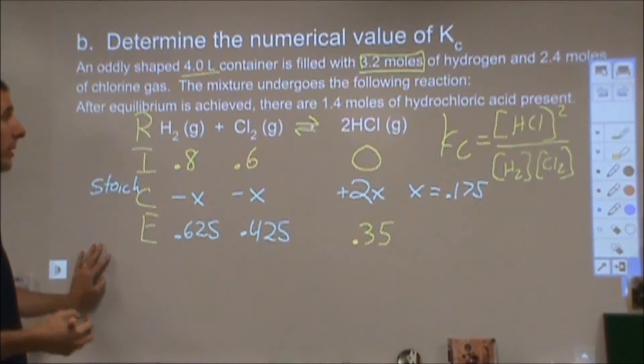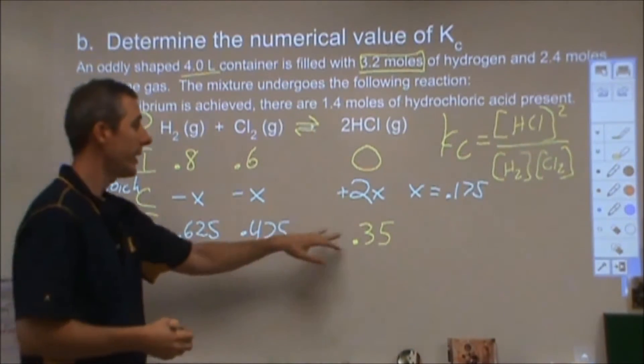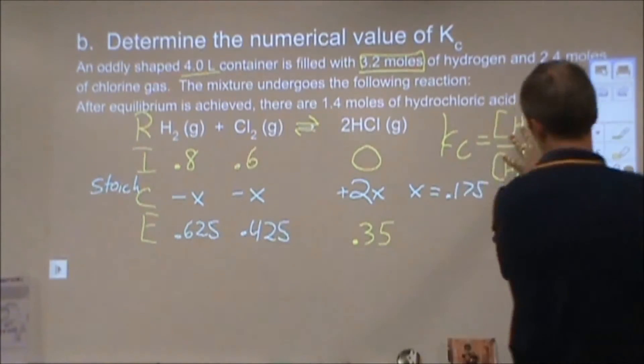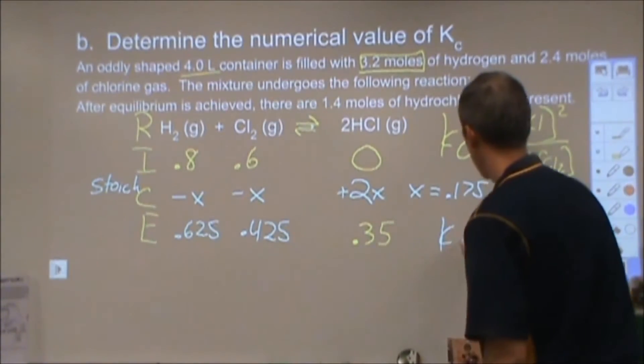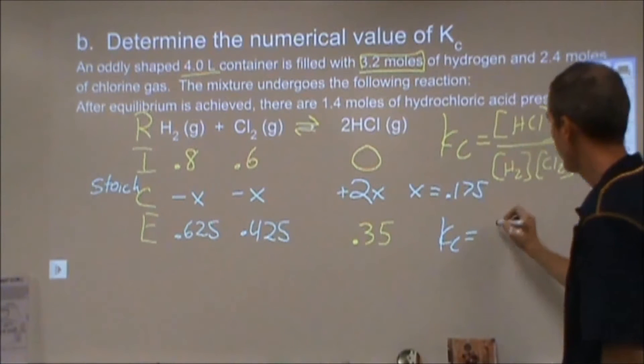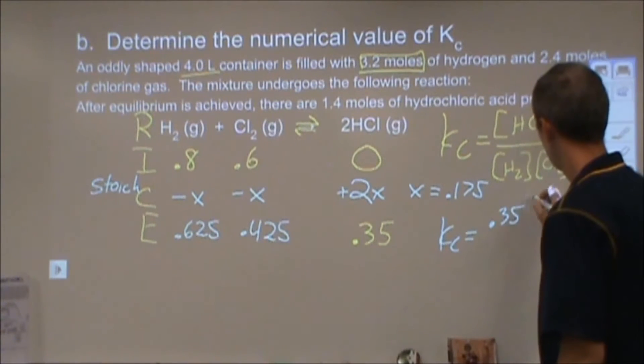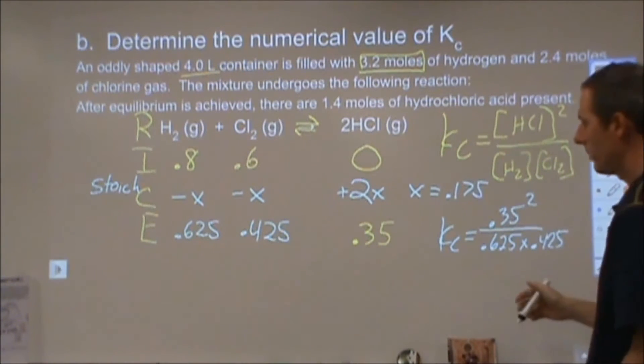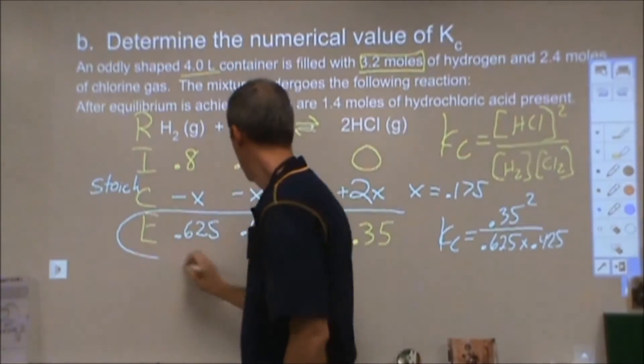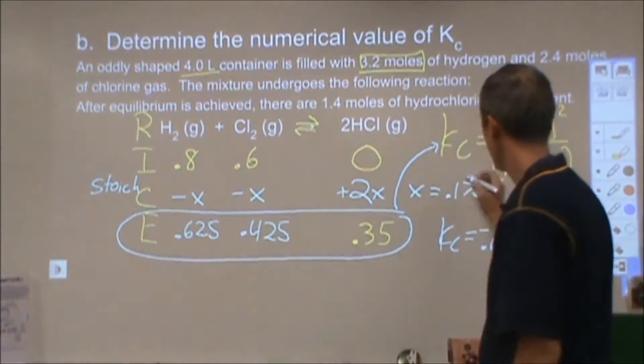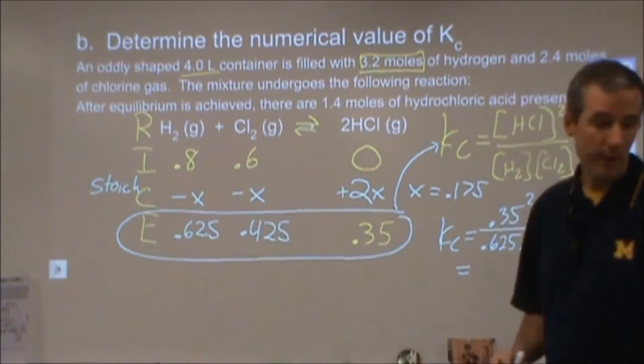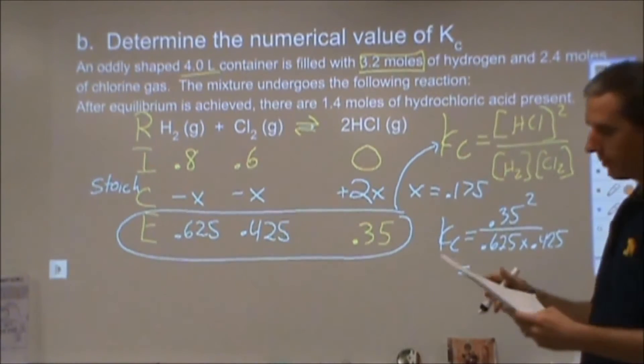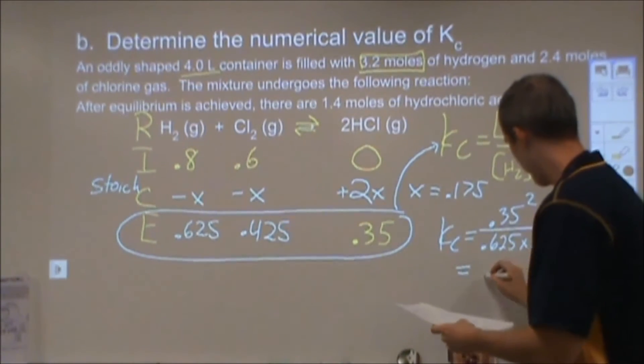So I now know my equilibrium concentrations of all three gases, and I can plug those into this expression to solve for k. It's going to be 0.35 squared over 0.625 times 0.425. So I'm taking these values and plugging these into the k expression, and that gives me my k value, which I have figured out previously, to be 0.461.